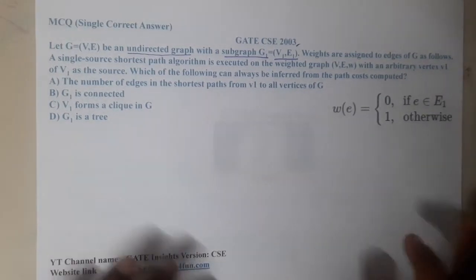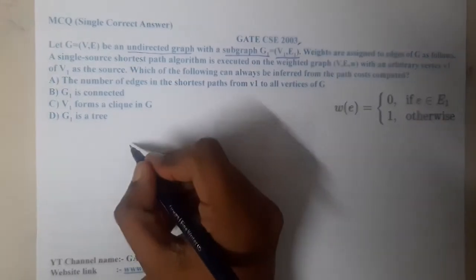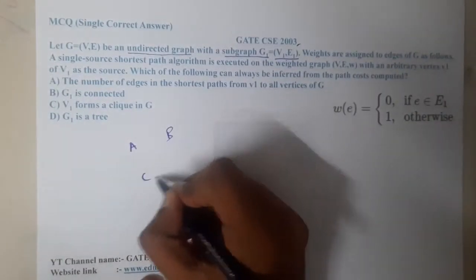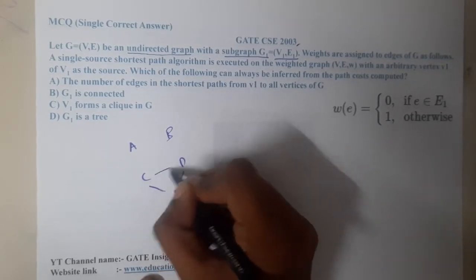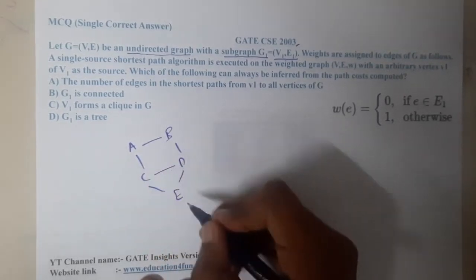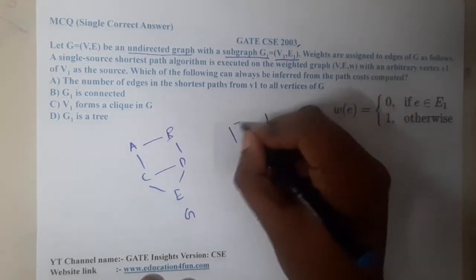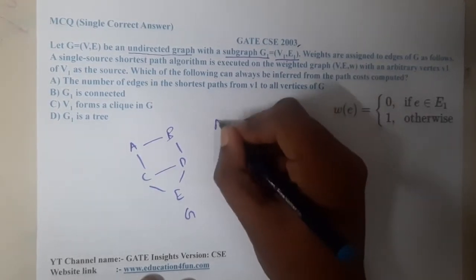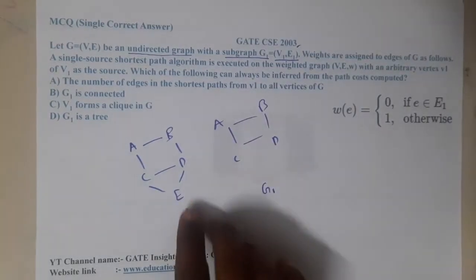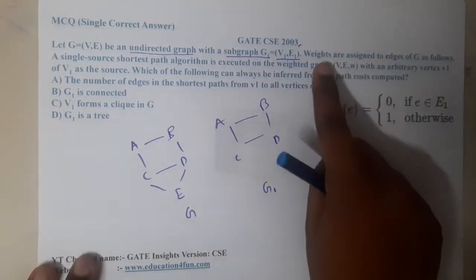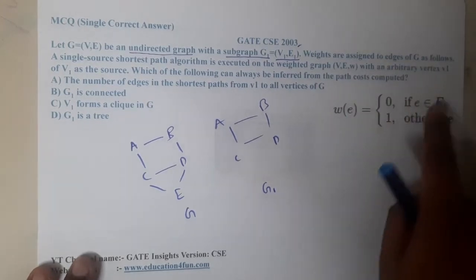Let us try to draw a small graph. Assume vertices a, b, c, d, and e — this is our graph G. I am drawing G1 which is a subgraph of it, containing vertices b, c, and e, and I removed the vertex d and its edges.